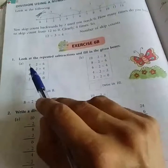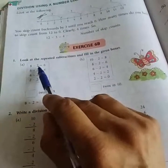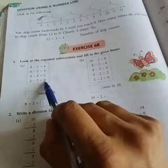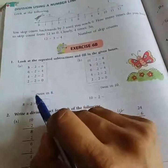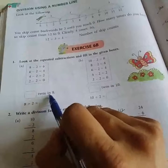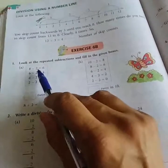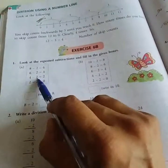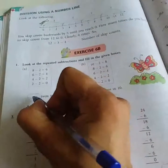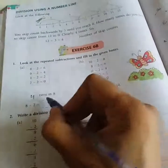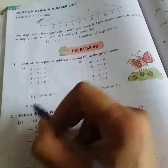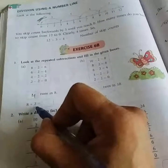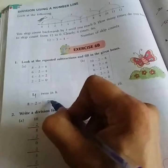That means, here 8 is subtracted for 2 times till we get 0. So, dash 2's in 8. How many 2's are there? 1, 2, 3, 4. So, 4 2's are there in 8. So, when 8 is divided by 2, the answer will be 4.